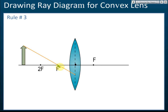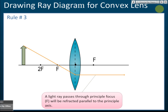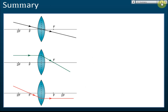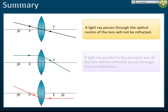Rule number three: if the light ray passes through the principal focus, then it will be refracted parallel to the principal axis. So a light ray that passes through the principal focus F will be refracted parallel to the principal axis. This is the inverse of rule number two — rule two says parallel then passes through principal focus, rule three says passes through principal focus then goes parallel.